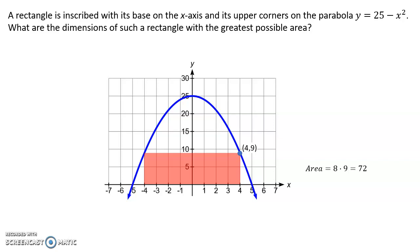The width of the rectangle along the base there is 8 because it's going from negative 4 to 4. The height is 9, the area ends up being 72. Now another rectangle could be this one, which is much narrower and taller. This one ends up having a width of 2, a height of 24, an area of 48.